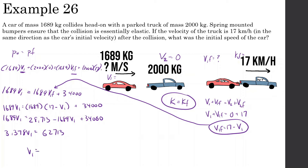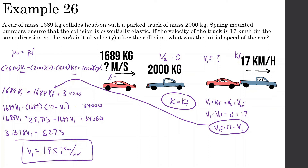Doing a bit of algebra: 63,713 divided by 3378 gives V1 = 18.57 km/h. So at the very beginning, this car was hitting the parked truck at 18.57 kilometers per hour.